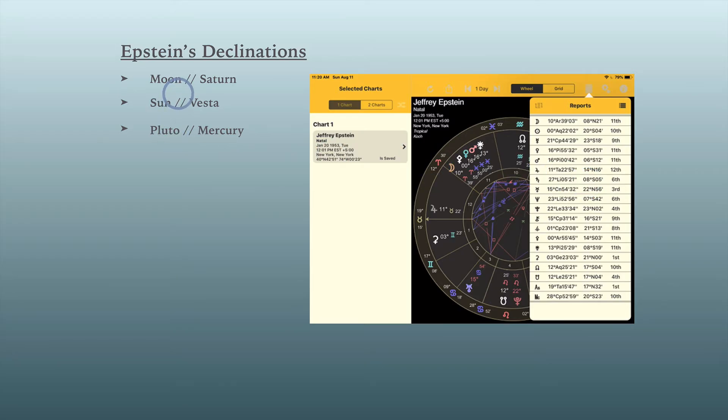In addition, he had sun parallel Vesta. Here's his sun, 20 degrees, come down to Vesta, an asteroid, 21 degrees. And this, from my research, I have seen people with similar strong sun Vestas where,